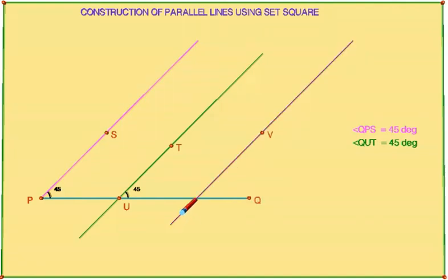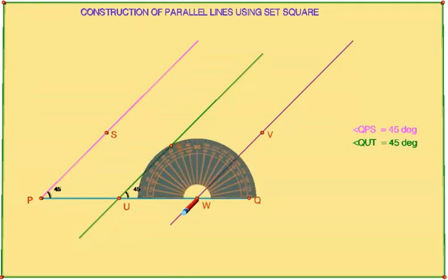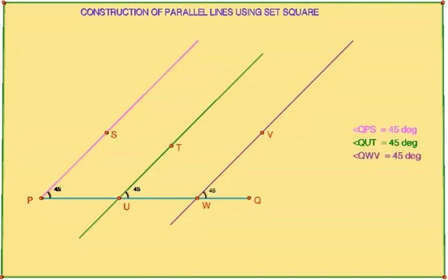Find the measure of the angle at W. Angle QWV is equal to 45 degrees again.